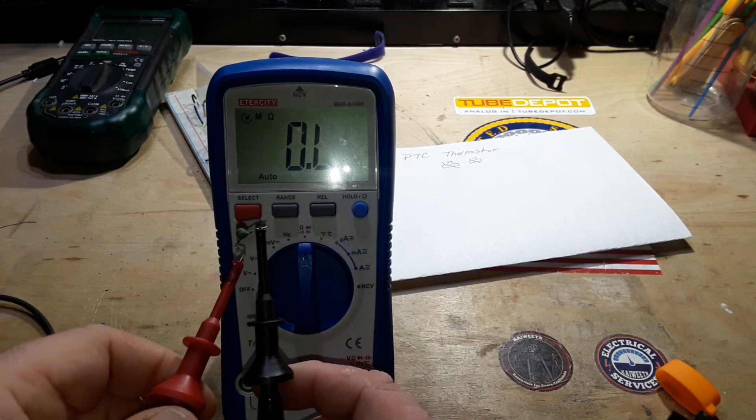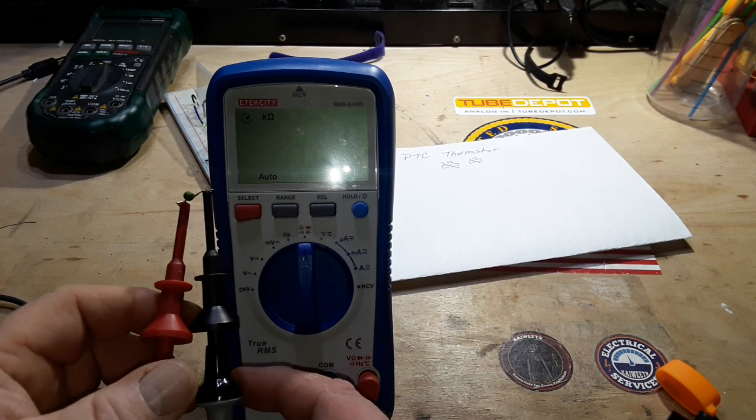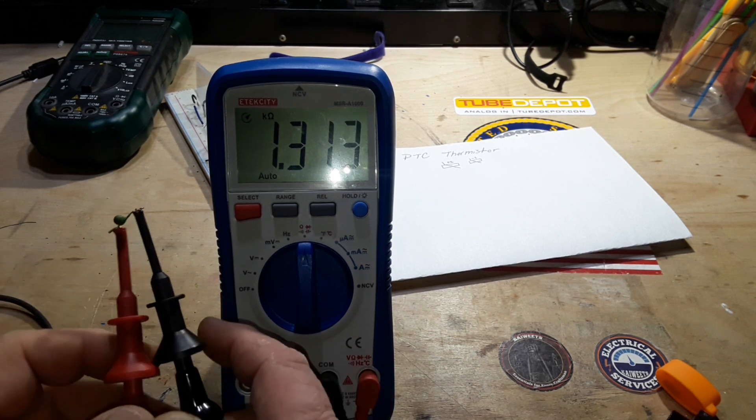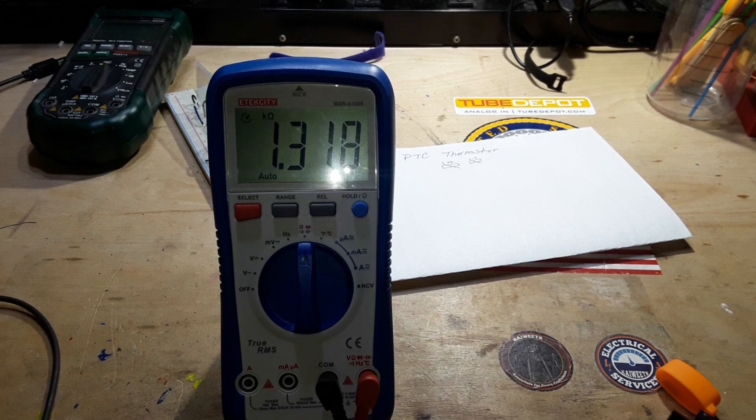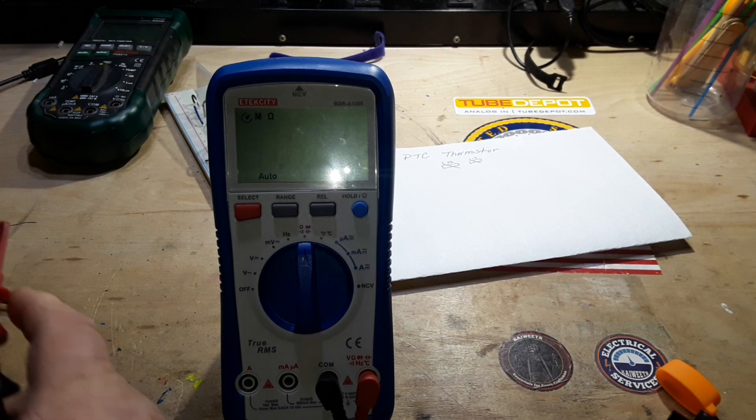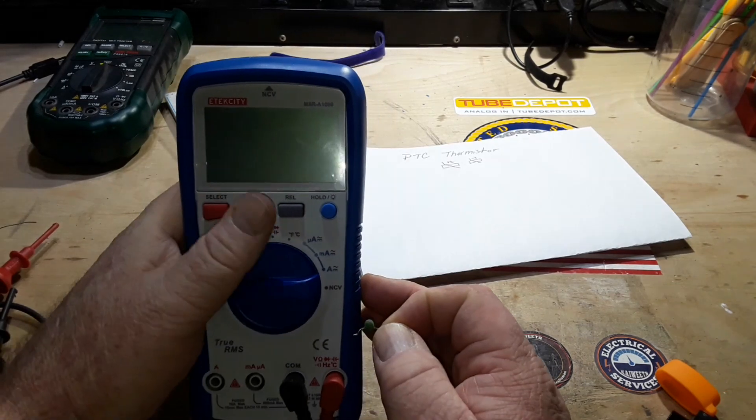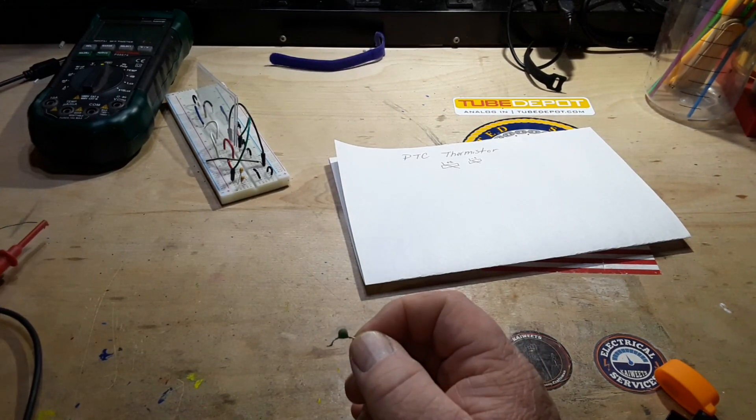Now see, this one's had time to cool. And as we hook it back up, we're back to 1.3K. So again, this is a positive temperature coefficient thermistor. They are also available in negative coefficient thermistors.